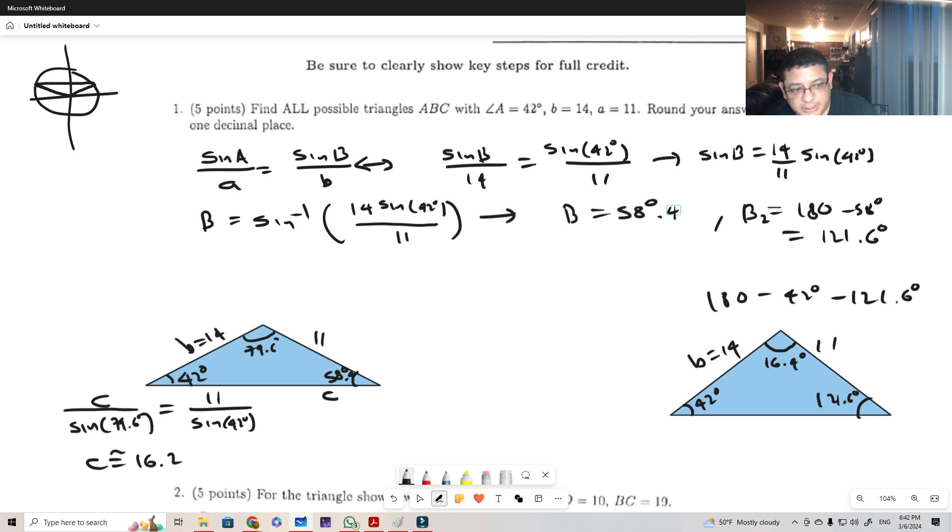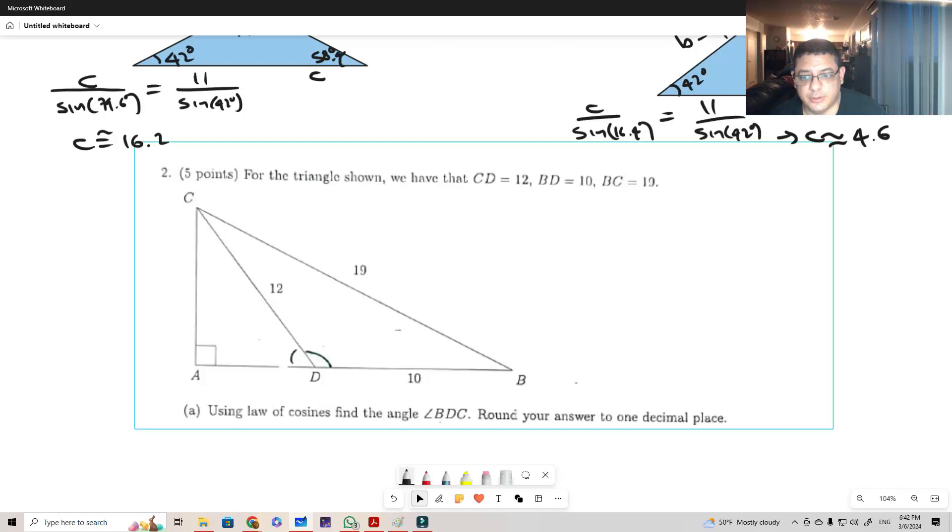And of course I can do the same thing to find what the value of c is here. So I can do c over sine of 16.4 equals 11 over sine of 42. If I use that to solve the equation, I'm gonna find out that c is approximately 4.6. That is after solving the equation in each case.